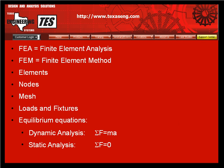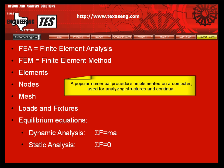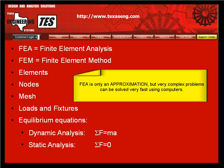Here are some terms used in simulation. FEA and FEM are used interchangeably and stand for finite element analysis or finite element method. It is a popular numerical procedure implemented on a computer used for analyzing structures and continua. The method is only an approximation, but very complex problems can be solved very fast using computers.